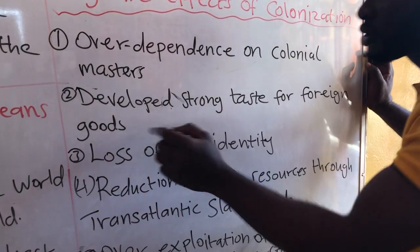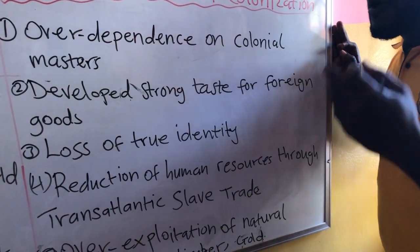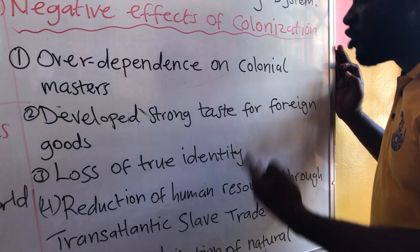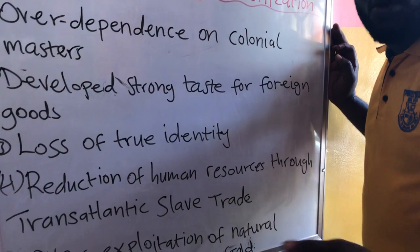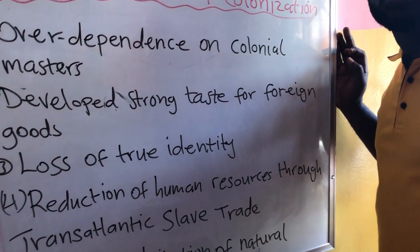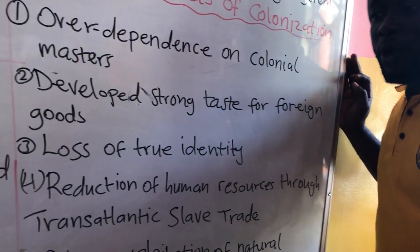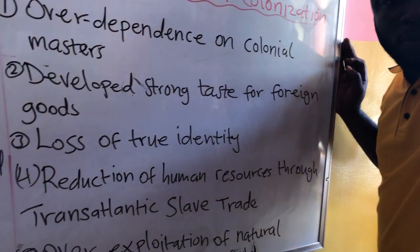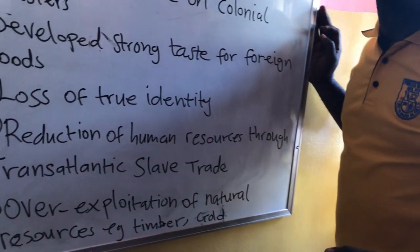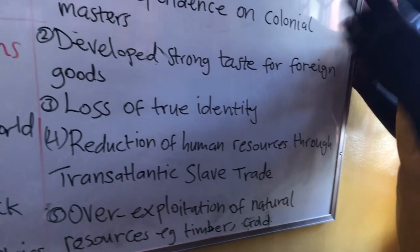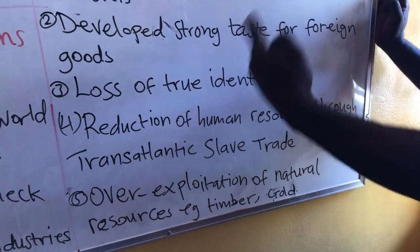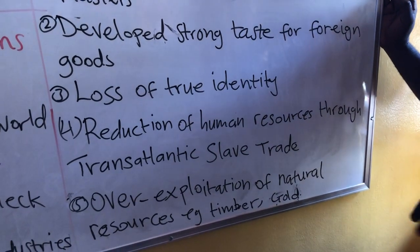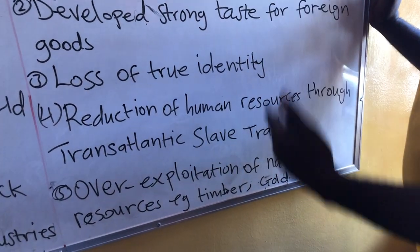Two, we have developed a strong taste for foreign goods — and it's still happening. As a result of colonization, we think that made-in-Ghana goods are no good, but imported goods are rather good, which is bad. When we do that, we end up collapsing our local industry. Look at the number of industrial establishments in our country — they have all collapsed just because Ghanaians have a strong preference for foreign goods over what is produced in Ghana.